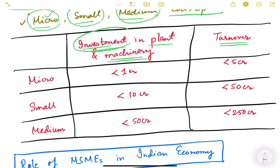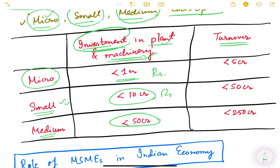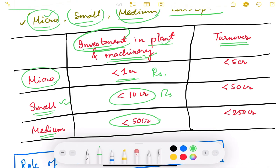Based on investment in plant and machinery: a company is called micro scale if the investment is less than 1 crore rupees; small scale if the investment is less than 10 crore but more than 1 crore; medium scale if the investment is less than 50 crores; and anything more than 50 crore is a large industry.